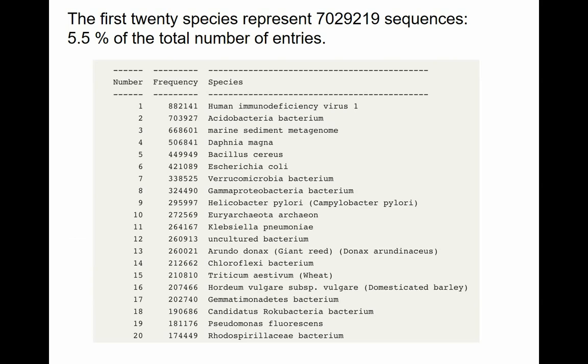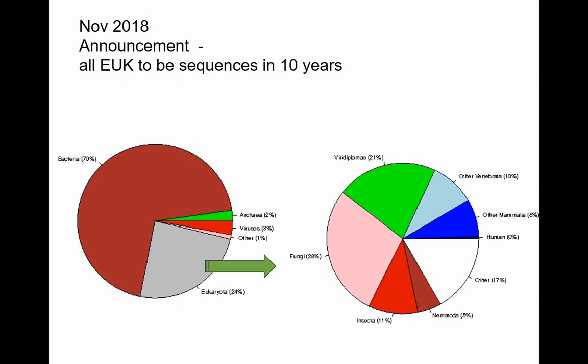When you look at the statistics, it's mostly bacteria, a small amount of archaea, viruses taking about three percent, and eukaryotes are about a quarter. If you zoom into eukaryotes, fungi - single-cell fungi - take 40 percent of those. So humans are here but represent almost nothing. Other mammals are eight percent of the eukaryotes part. So you see that the database is very biased.